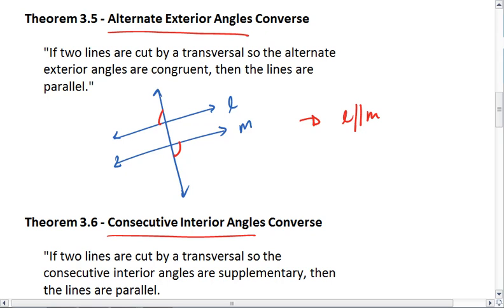Again, this is true both directions. So given two lines cut by a transversal, if the lines are parallel, then alternate exterior angles are congruent. If alternate exterior angles are congruent, then the lines are parallel.